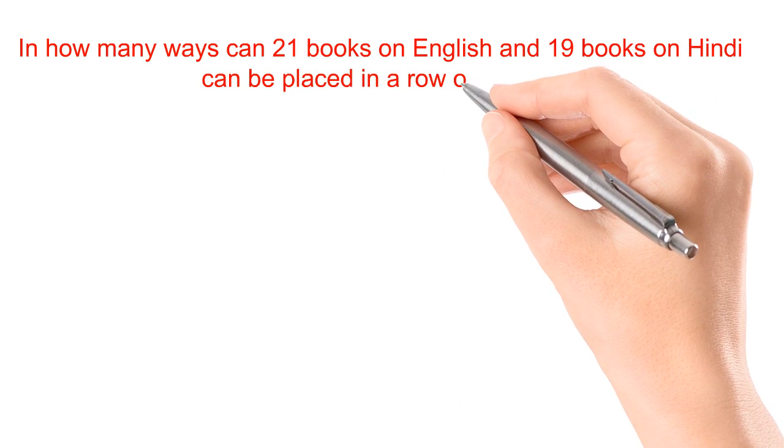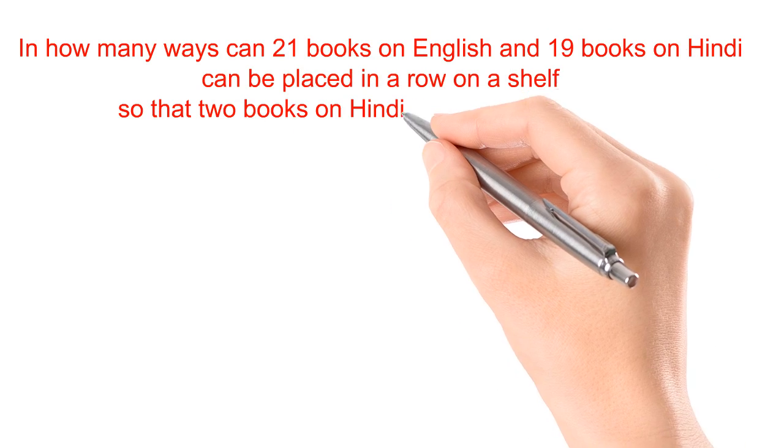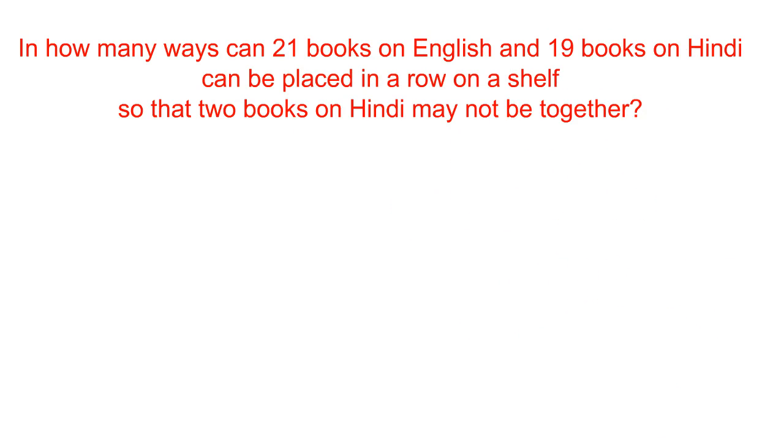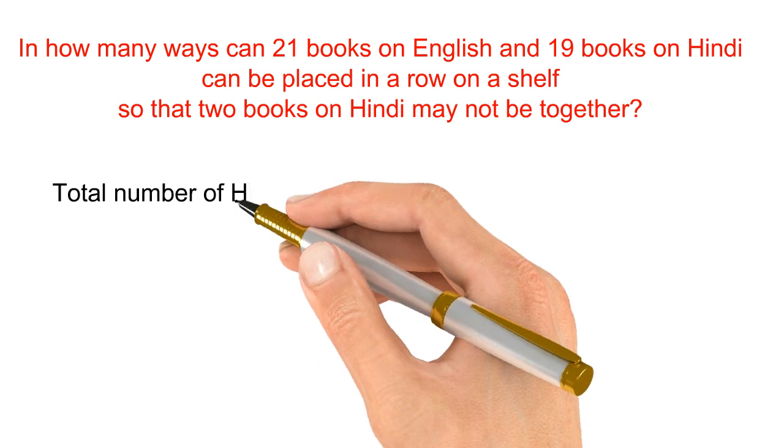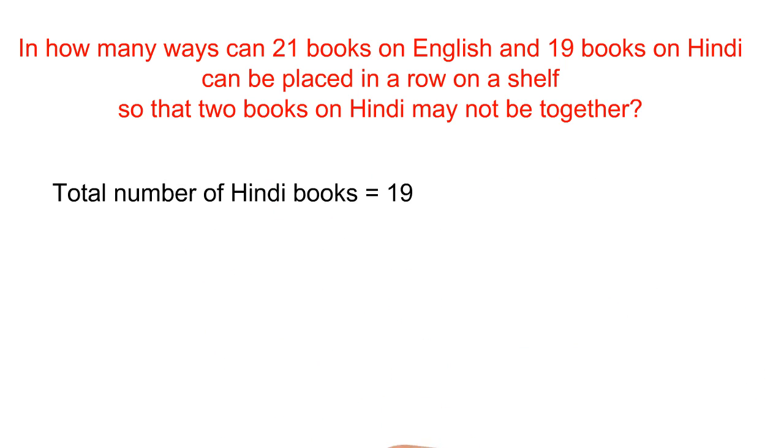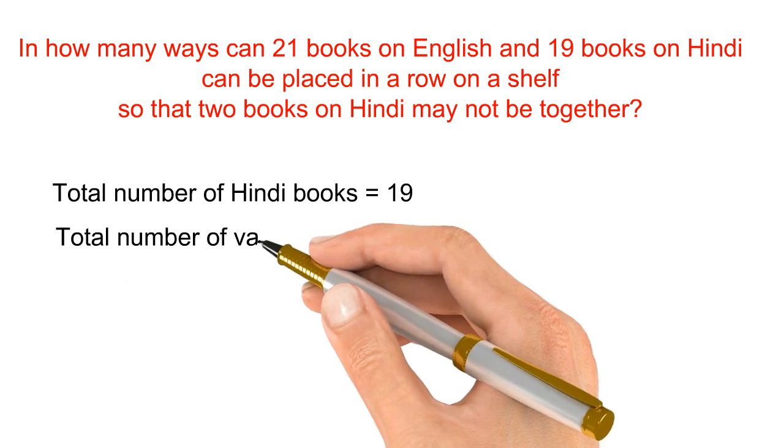Here the total number of Hindi books is 19. And number of vacant places is, when you arrange it that way, you will get 22. Out of 22, you are placing 19 Hindi books. So the answer will be 22C19.